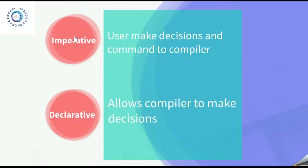The next difference is in imperative programming paradigm, the user makes decisions and commands the compiler. But on the other side, in declarative programming paradigms, the user allows the compiler to make its own decisions.